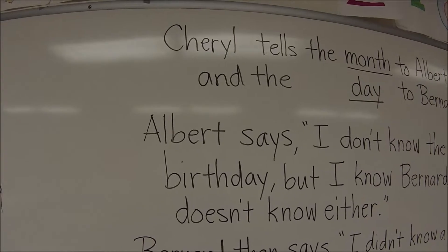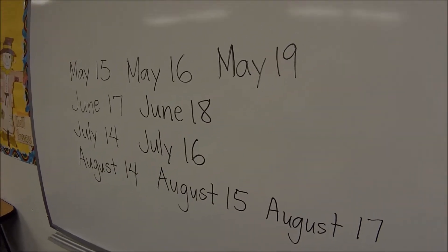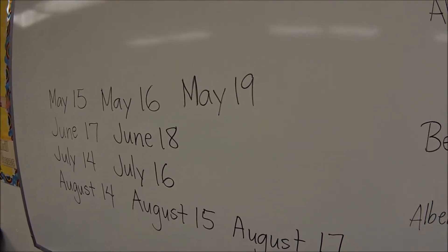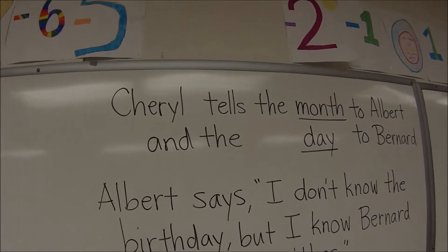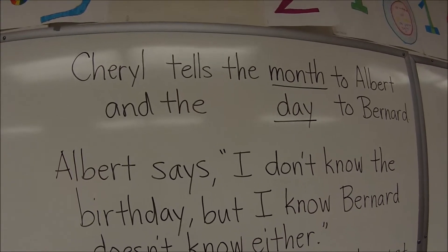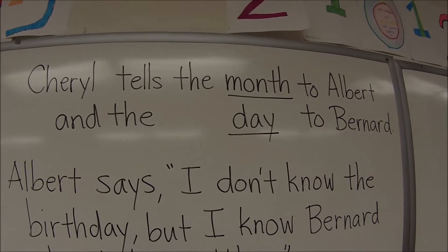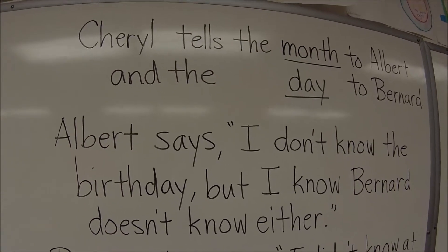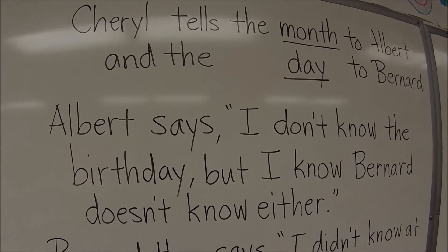So here is the problem. Cheryl has a birthday and it's one of these 10 dates. She's gonna tell her friends Albert and Bernard different information about her birthday. So let's figure out what that is. Cheryl tells the month to Albert and the day to Bernard. What matters is the month is being told to Albert and the day is being told to Bernard. There are three clues to this problem. I want to take each clue one at a time just to dissect it, not look at the whole thing at once, and try to explain how we get the answer.